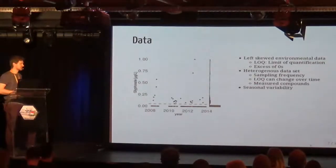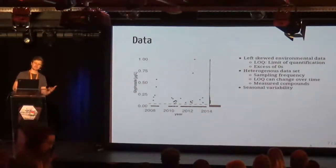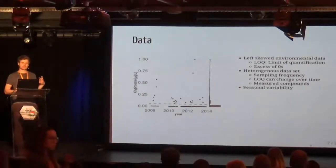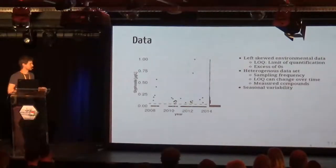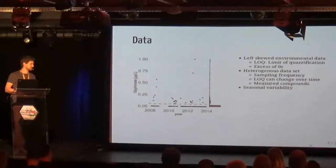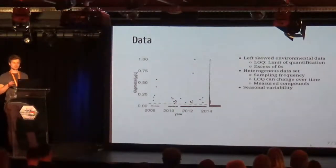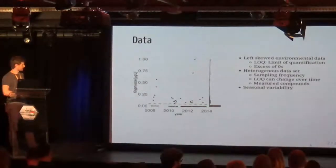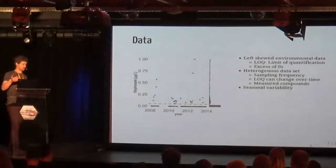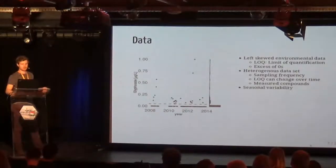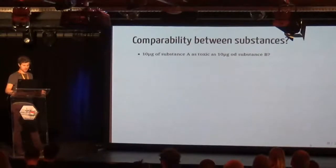It's also quite a heterogeneous dataset in terms of sampling frequency. It was collected by 13 different federal states, each doing it differently. Also the limit of quantification could change over time, and the measured compounds varied over time — they increased. And as pesticides are applied to fields in spring or summer, we do have a seasonal variability of input into aquatic systems.